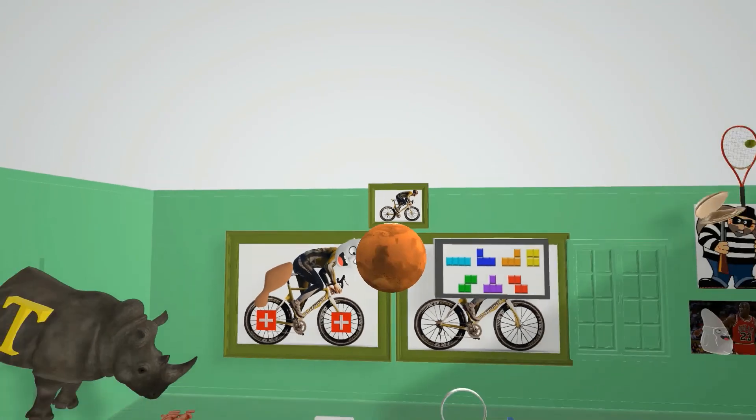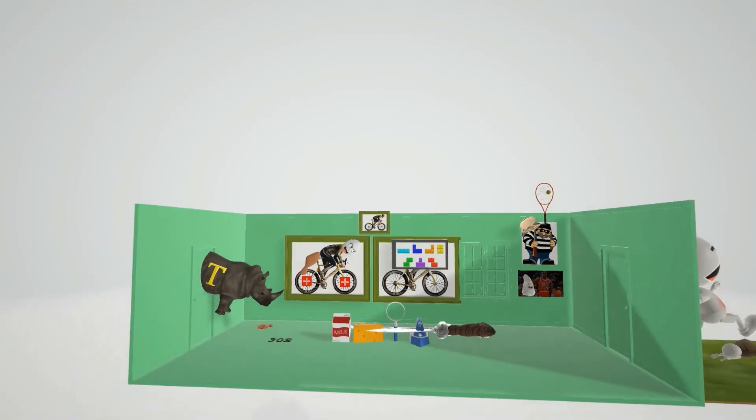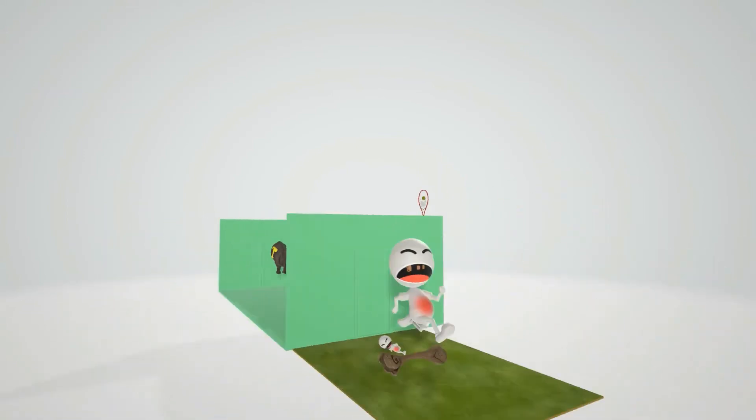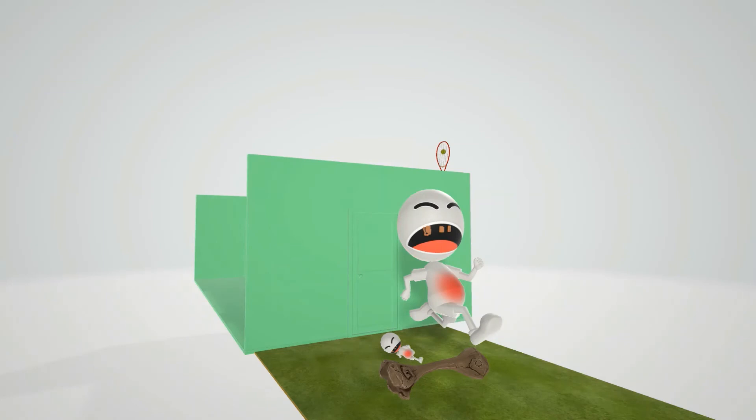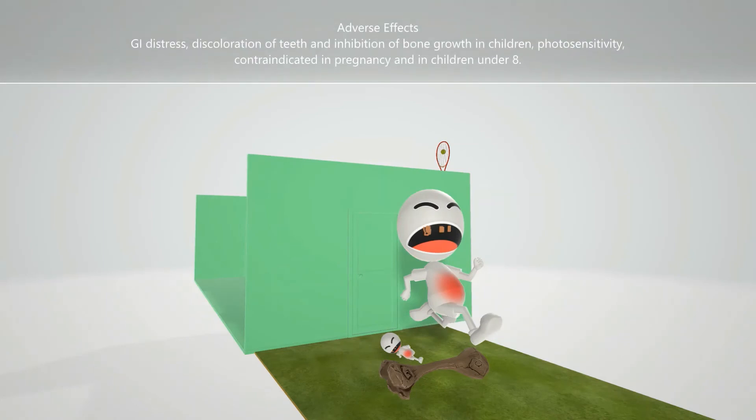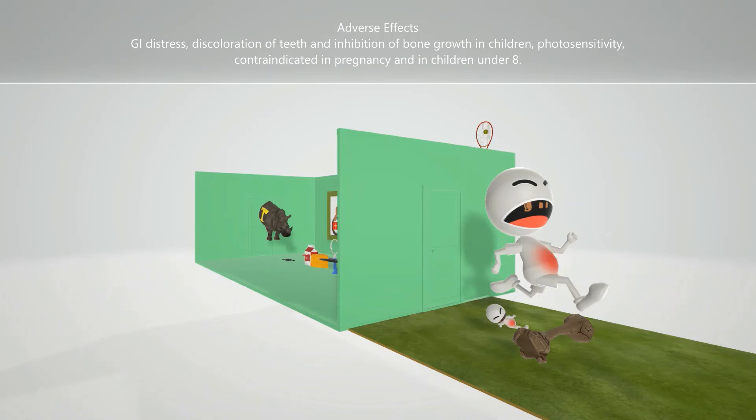Now let's talk about adverse effects. Here's this guy running away from the rhino. We see he has GI distress by his stomach. We also see he has discoloration of teeth, which is another adverse effect of tetracyclines. He's jumping on top of this bone that's not growing. Inhibition of bone growth in children is an adverse effect of the tetracyclines.